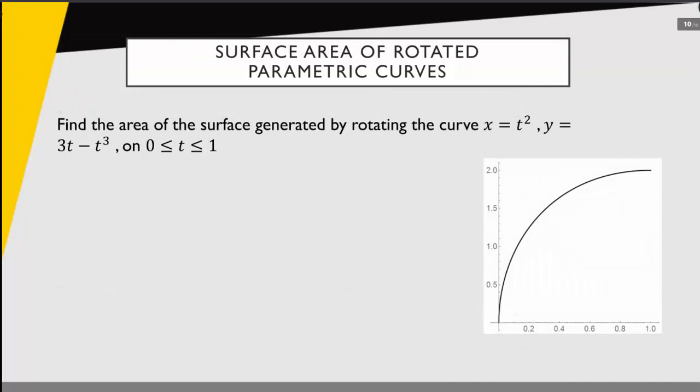All right, so we want to find the area of the surface generated by rotating this curve x equals t squared and y equals 3t minus t cubed on the interval from 0 to 1 about the different axes. And so how are we going to start with this?